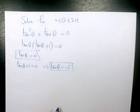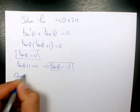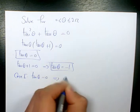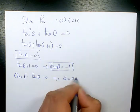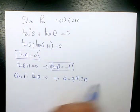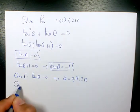So we have two cases. Case one, when tan theta is 0, it means that theta is 0, pi and 2 pi, because tan 0 is 0, tan pi is 0, tan 2 pi is 0 as well. So case two,